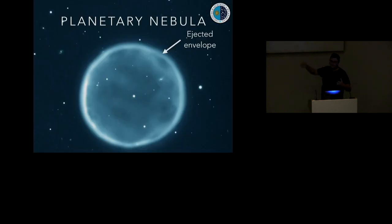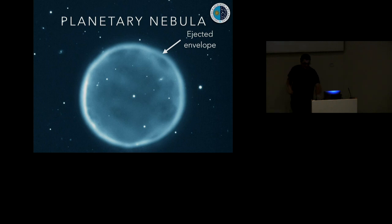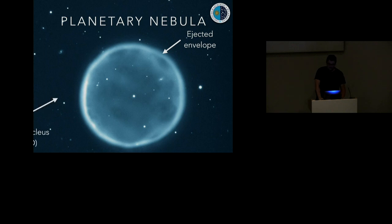This classical picture we have of a planetary nebula, this is Abel 39, sort of an archetype of a single star planetary nebula, where we have this ejected envelope, which was lost as part of a slow, dense wind while on the asymptotic giant branch, which is then ionized by the remnant, which was previously the core of the star, is now evolving towards being a white dwarf.